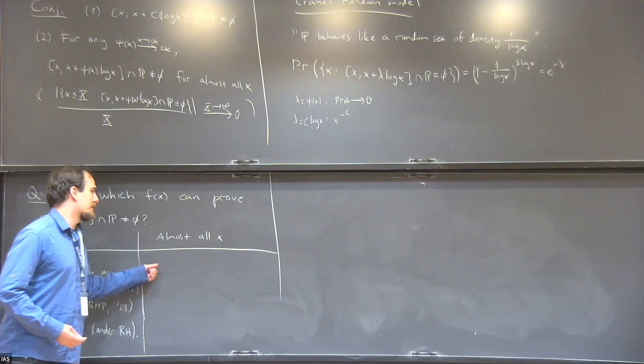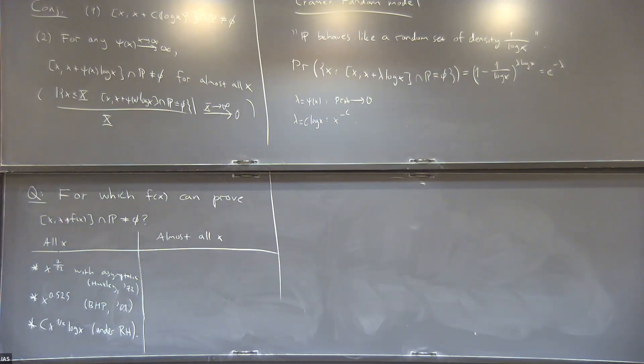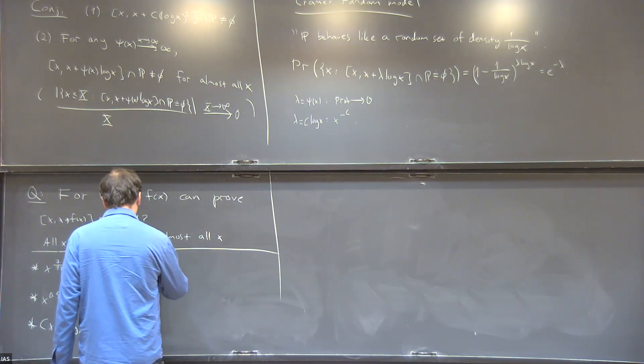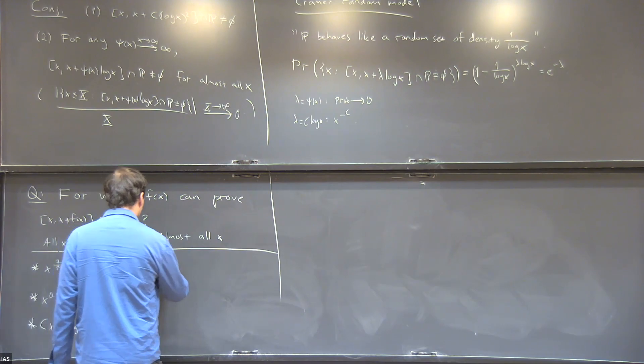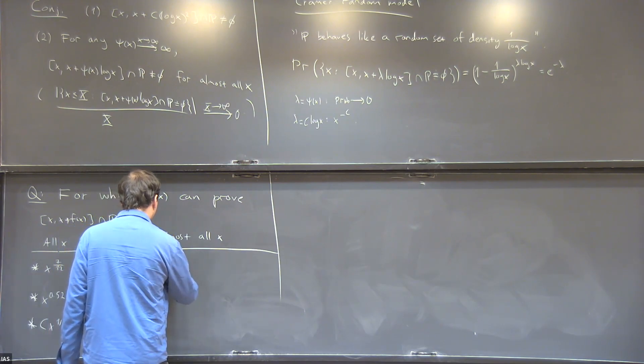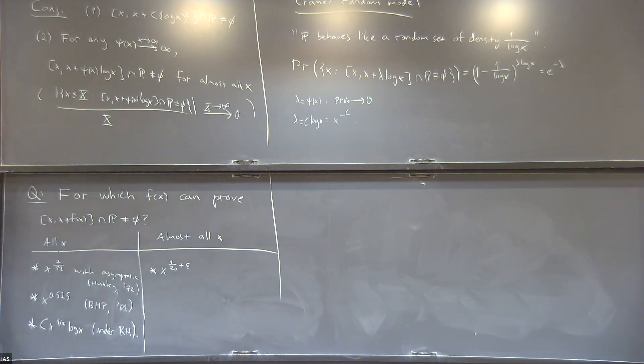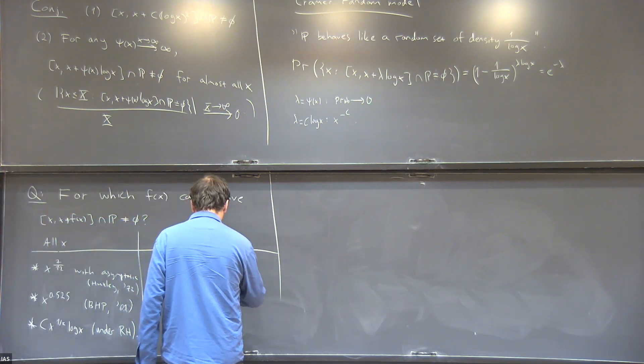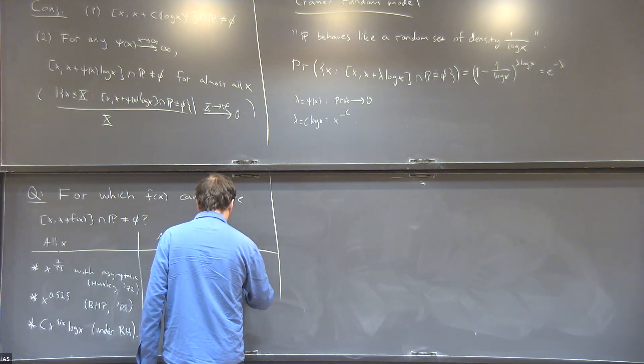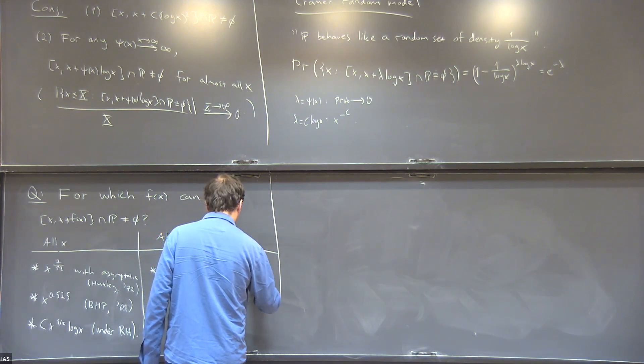If we're going to look at almost all X, the results are a bit better, but still not anywhere near Cramér. Intervals of length X to the 1/20 plus epsilon are known to contain primes almost always. This is a result of Harman from 1996.